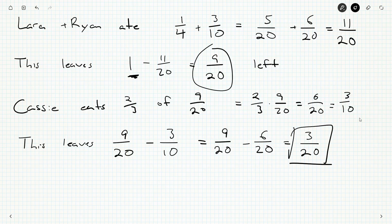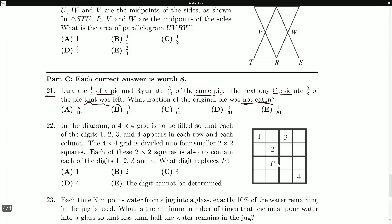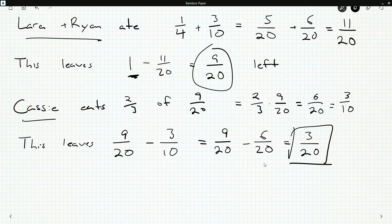And that's how much is left that isn't eaten. Laura and Ryan have their amount of the pie. They take eleven twentieths of the pie. Cassie has three tenths of the pie. And that leaves three twentieths of the pie. And let's see, is that a possible answer? Yes, it is. It's D. So, that's what we're going to bubble in.